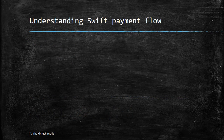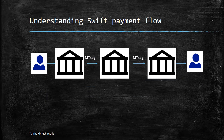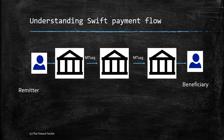So first let's understand what is a Swift payment flow and then how GPI fits in. This is the typical scenario of a payment chain wherein a remitter is actually sending across some funds to a beneficiary, and it goes along the payment chain as seen here. So this could be a simple one as depicted here with bank A, B and C, wherein MT-103 is flowing in a chain.